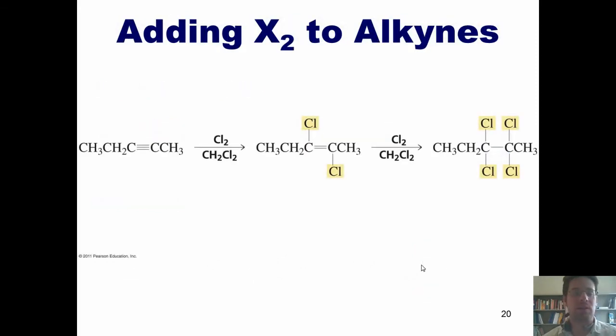Which brings us to our next reaction, adding X2, or halogen, to alkynes. What in the world happens here? What happens is this. If we take an alkyne, and I've shown a generic example here, and we add chlorine or bromine, the chlorine or bromine ends up adding two chlorine atoms on each carbon, leaving a carbon-carbon double bond in between.